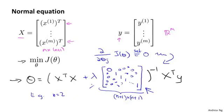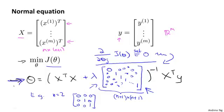So if n equals two, then that matrix becomes something that looks like this: zero, and then ones on the diagonals, and zeros on the rest of the off diagonals. I'm not going to show this derivation, which is frankly somewhat long and involved, but it's possible to prove that if you are using the new definition of j of theta with the regularization objective, then this new formula for theta is the one that would give you the global minimum of j of theta.